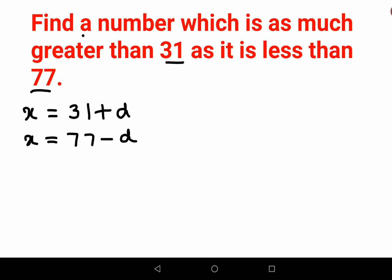Now since both of them are equating to x, we can equate both of them. So 31 plus d equals 77 minus d.